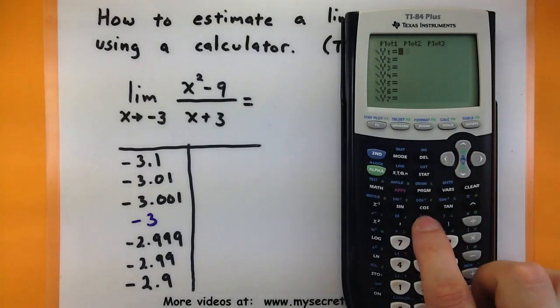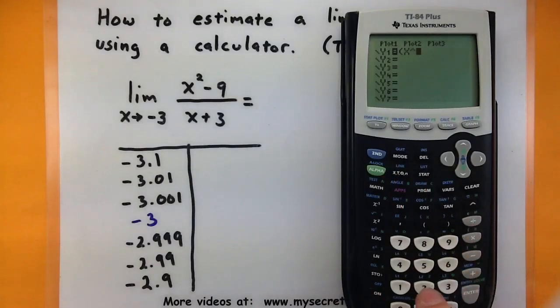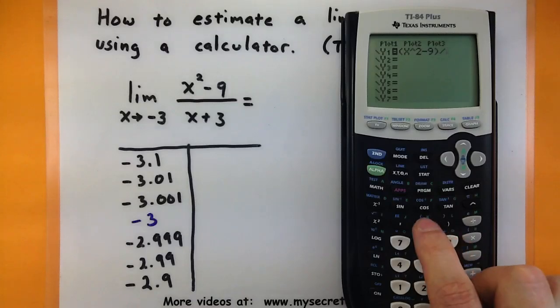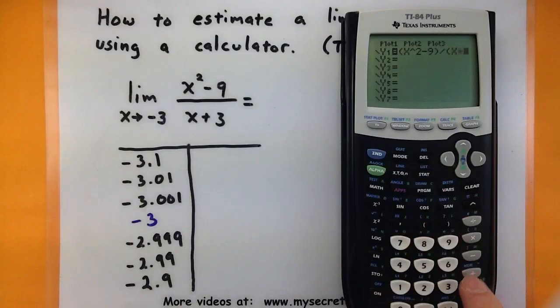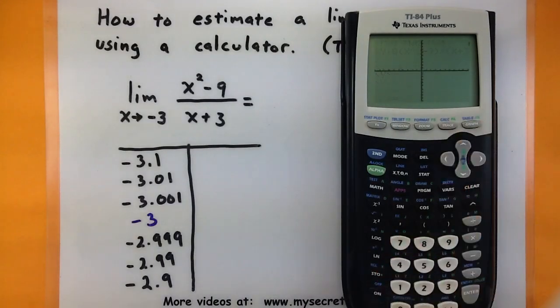So I'm going to type in parentheses, x squared minus 9, close parentheses, all divided by parentheses, x plus 3, close parentheses, enter. So that basically just takes my function and puts it into the calculator.